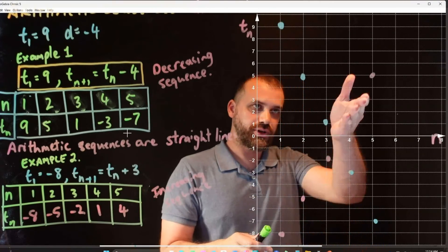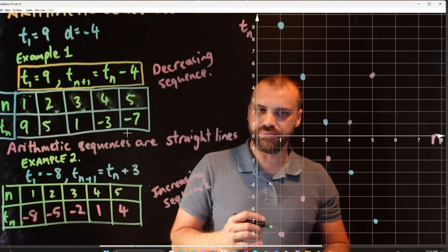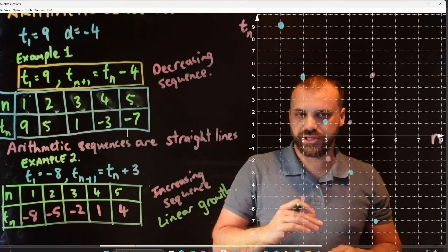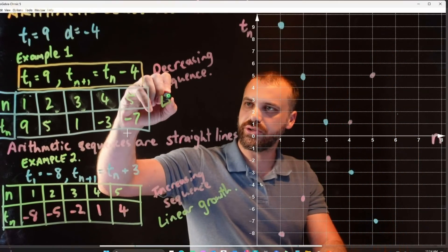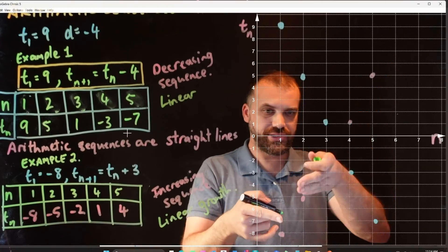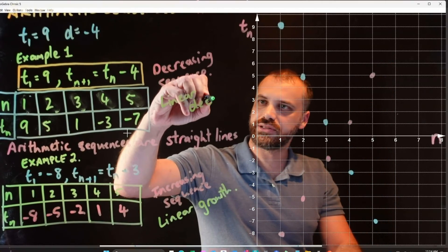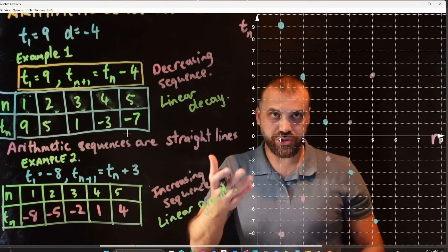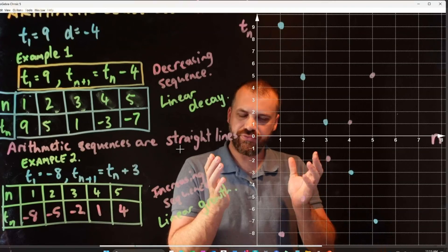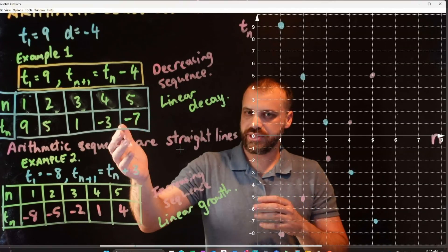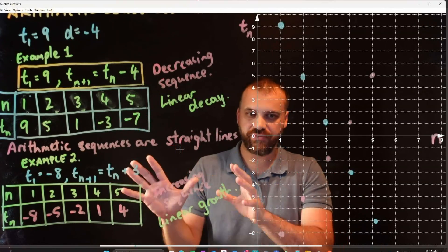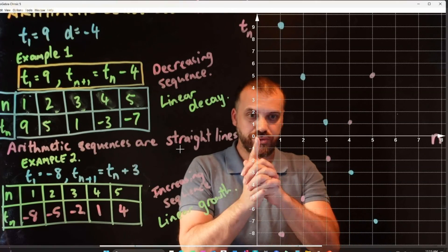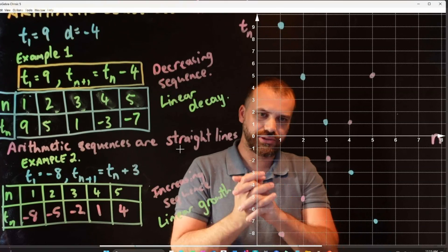An increasing sequence — one that goes up — can be used to model something called linear growth: growing over time. A decreasing sequence can be used to model something called linear decay. Linear, like a line — it's in a straight line. Decay, like something getting worse and worse, smaller and smaller. We've seen two examples; the tables come from year 8 math so we should feel confident. We should be able to spot our mistakes because we know these need to be in straight lines.